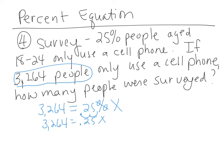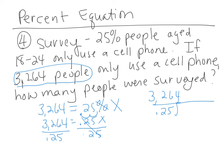We're working on the X side, and we're going to divide by 0.25 on both sides. So — stop, drop, divide — 0.25 goes into 3,264.